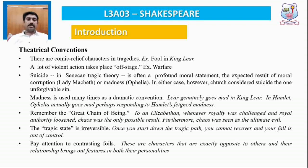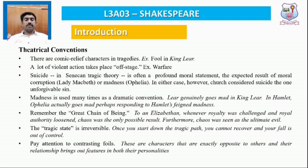Another important element in Shakespearean tragedy is the great chain of being. Regarding royalty and kingship, it should never be challenged or endangered, and authority must be held with high power and respect. Whenever the great chain of being is thwarted or broken by tragic heroes, they face the severe punishment of death. At any cost, the great chain of being should not be broken.